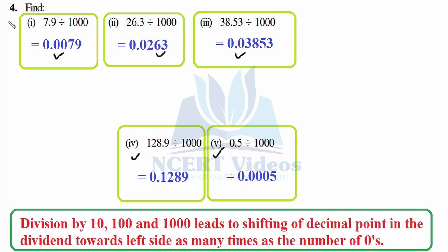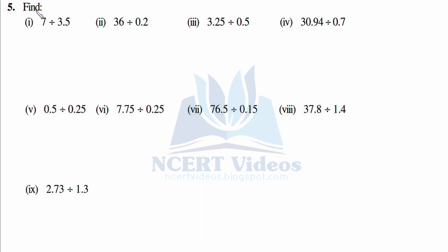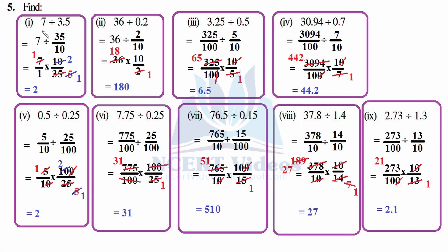Fifth: find 7 divided by 3.5, 36 divided by 0.2, 3.25 divided by 0.5. Now we have to divide by different numbers apart from 10s or 100s. For 7 divided by 3.5: write 7 as it is, division as it is, 35 over 10. You know why. Now 7 as it is, multiplication and flipping gives 10 over 35. Cutting opportunity: 5 into 7, so 5 was left and with 10 we can cut it — 1×5 is 5, 5×5 is 5, so 2×1 is 2: the whole number is 2.